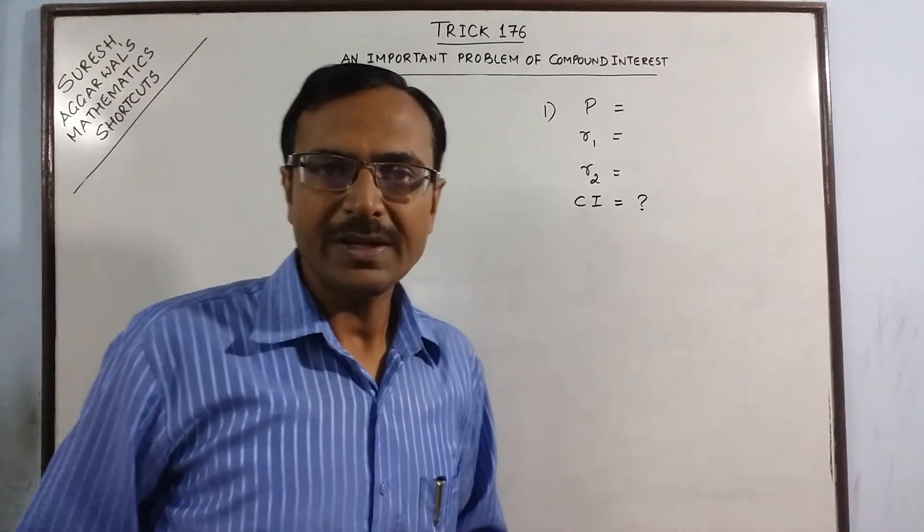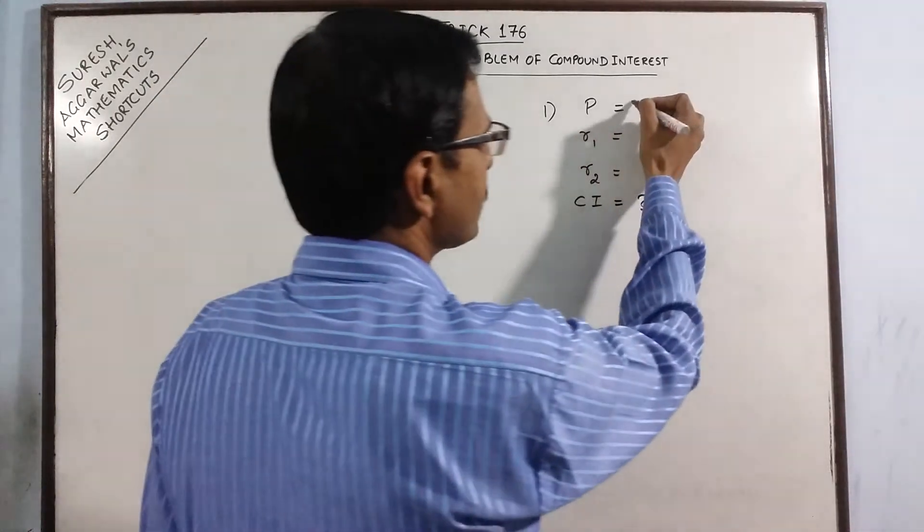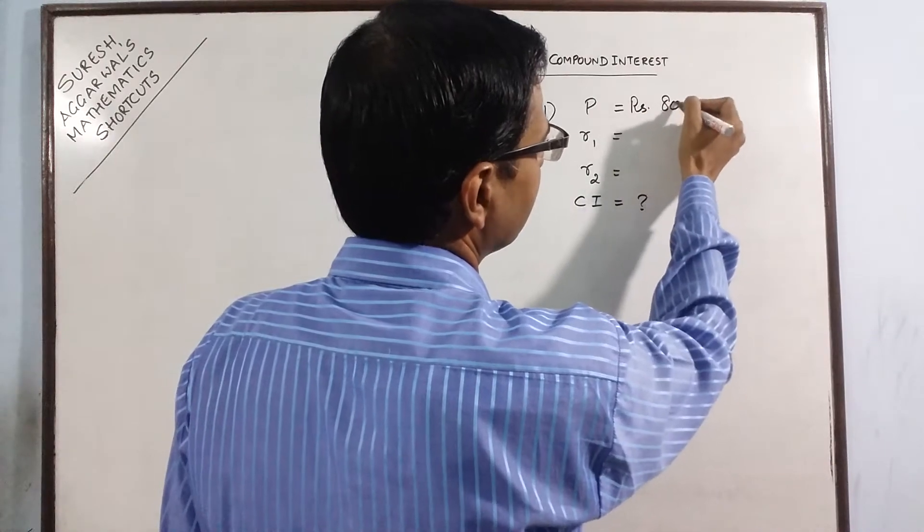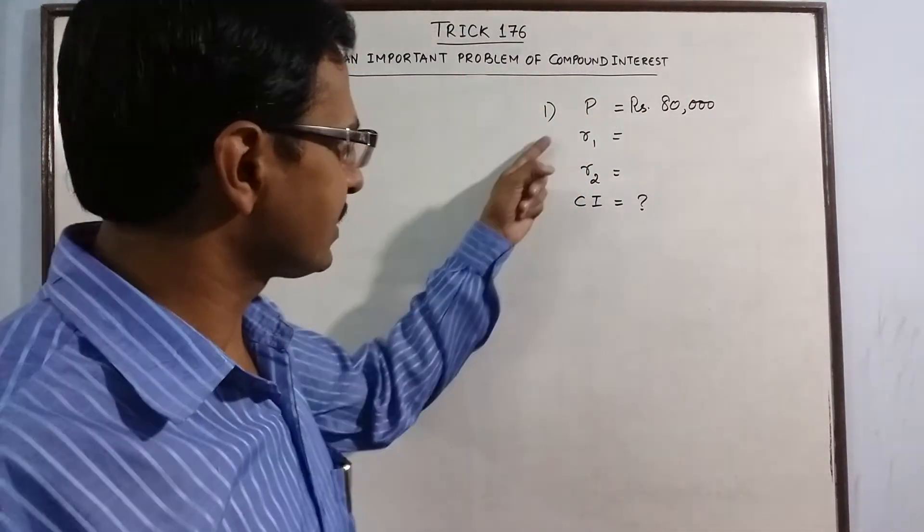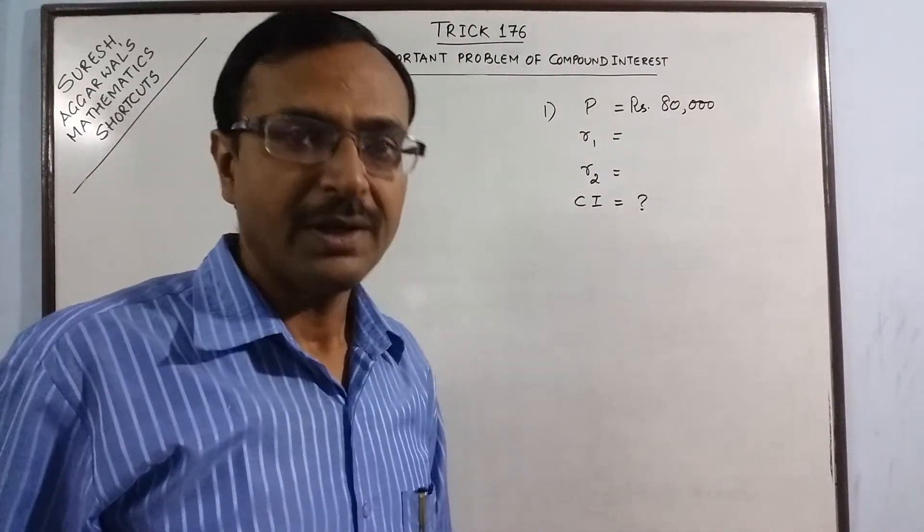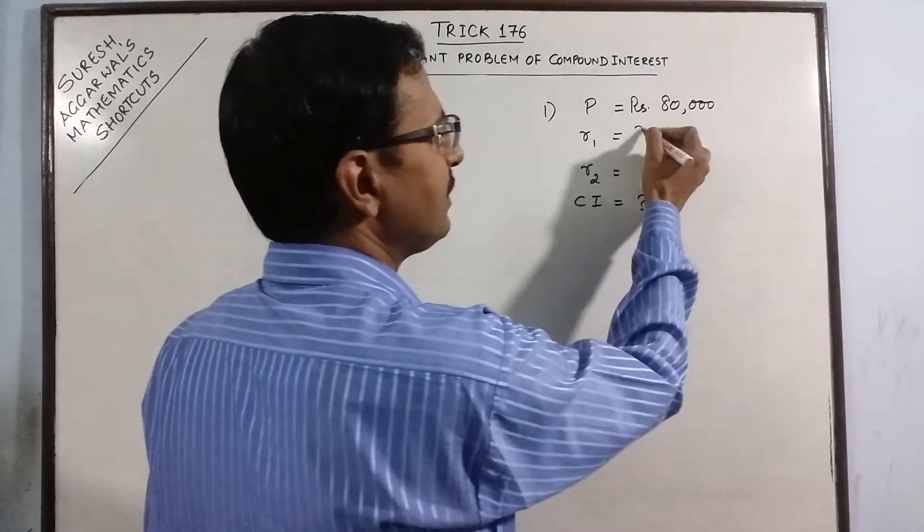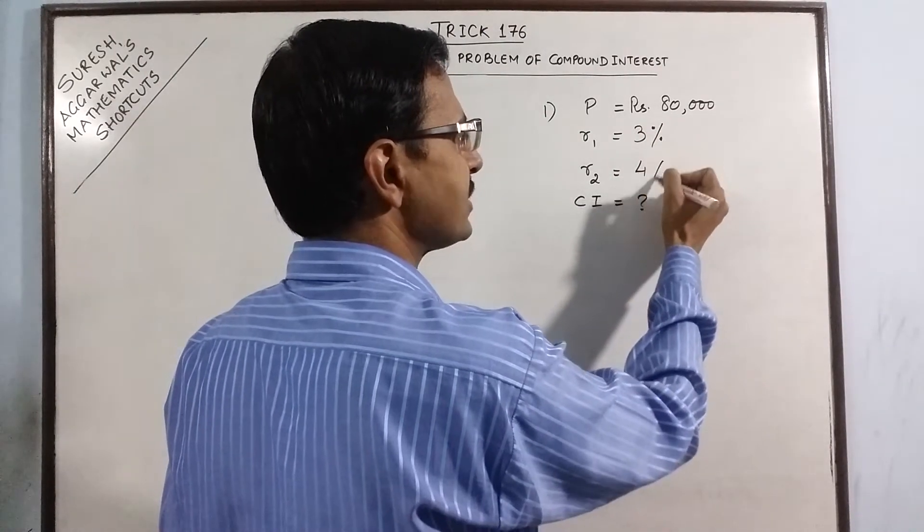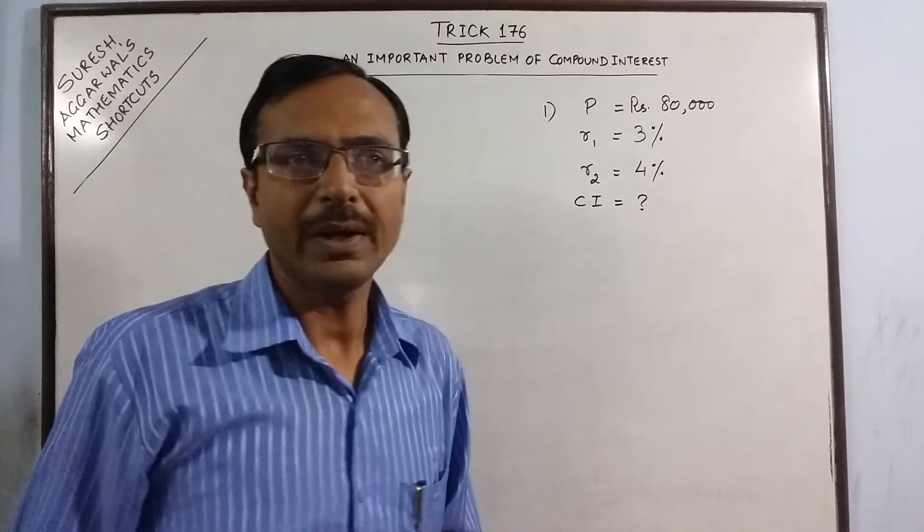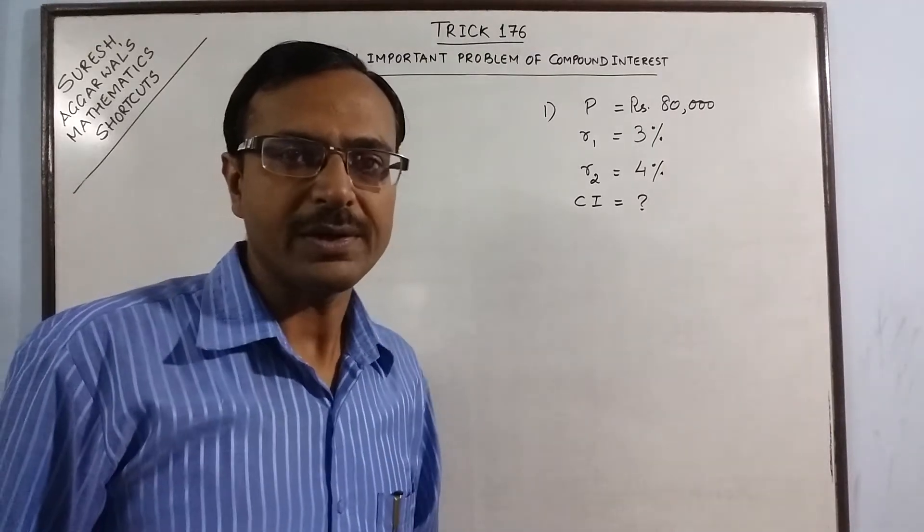I will take one example here. Say the principal amount is Rs. 80,000 and it is invested for two years compound interest, but the rate of interest for the first year is 3% per annum and for the second year it is 4%. Now I need to calculate the compound interest.